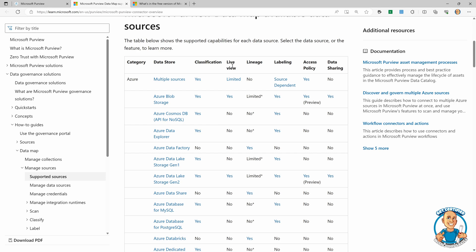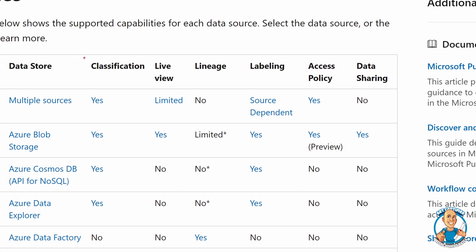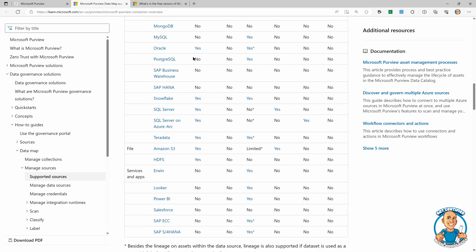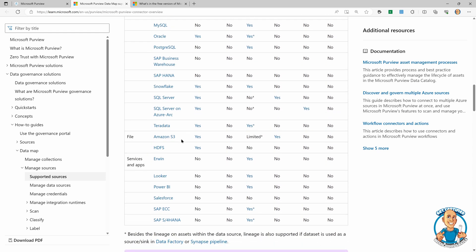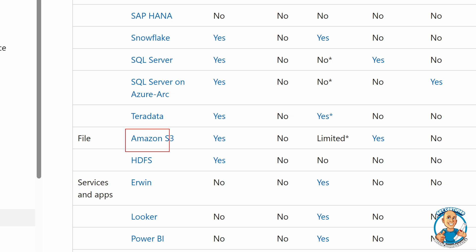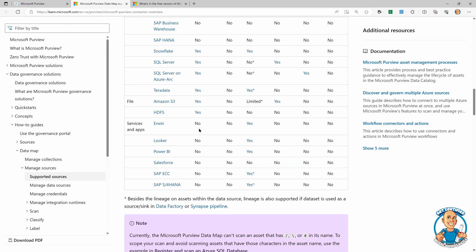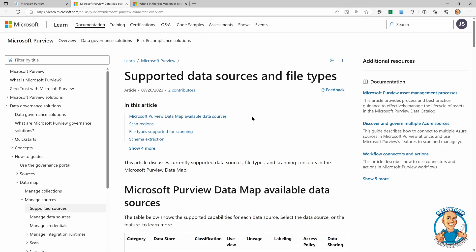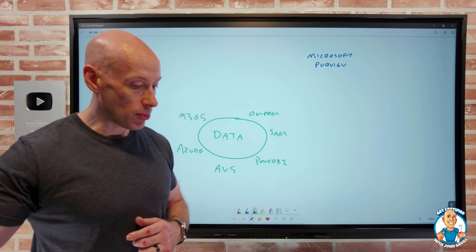And we can even see some of the different types of capabilities, its ability to have classifications, live view, lineage, either history of the data. I can label the data, access policy, data sharing. Then we can see through the different types of database supported file systems. Here we can see, for example, the Amazon S3, different services and applications. So a huge different range of data sources is available for us.